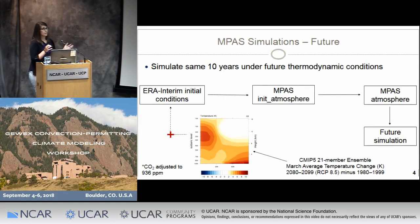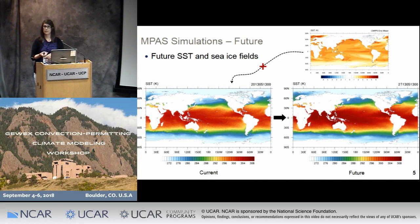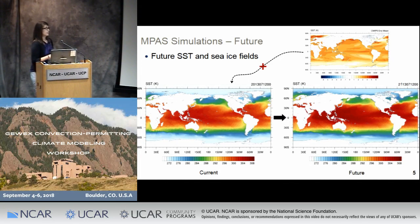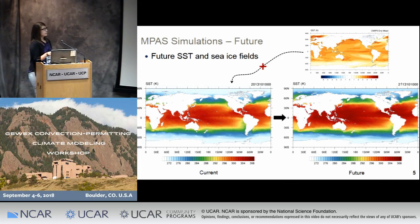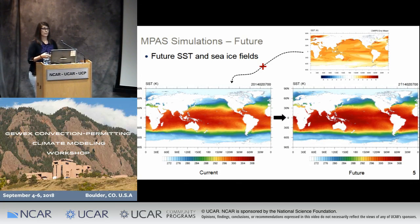Once we have our warmed conditions, we can run that through MPAS as-is, and that gives us our future simulation for whatever year we're working with. For sea surface temperatures, we're working with those in the same way as the initial conditions — calculating temperature deltas from the GCM ensemble and adding them to the ERA-Interim sea surface temperatures. The animations shown here are for the 2013 simulation, with current SSTs on the left and future on the right, and an example of the temperature delta applied at the top. Handling the SSTs this way allows us to preserve those high-resolution gradients while also accounting for the predicted warming.